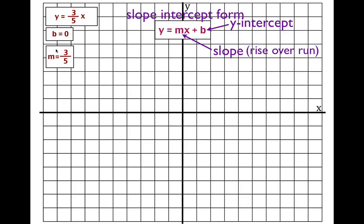We can use the y-intercept and the slope to get the two points needed to graph this line. We always start with the y-intercept — it's zero, so we put a point at y equals zero right at the origin. Then, starting from the y-intercept, we use the slope three-fifths: rise over run. The rise is three, the run is five, both positive. So we go up three, then to the right five, and place a second point there. We draw a line through those two points. That is the line y equals three-fifths x.